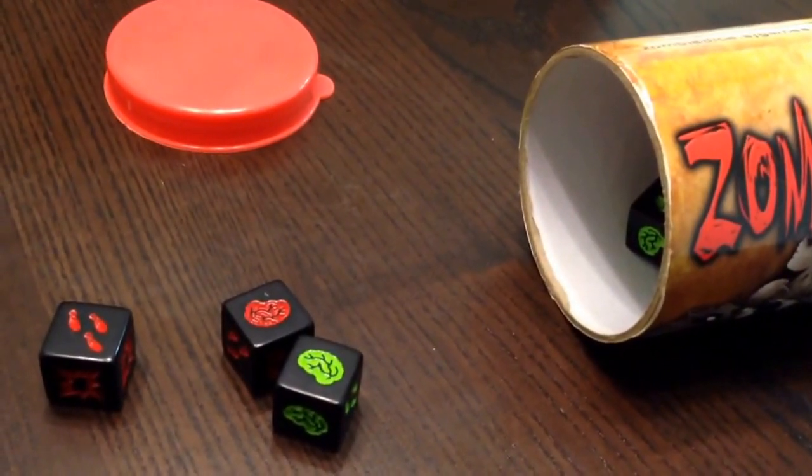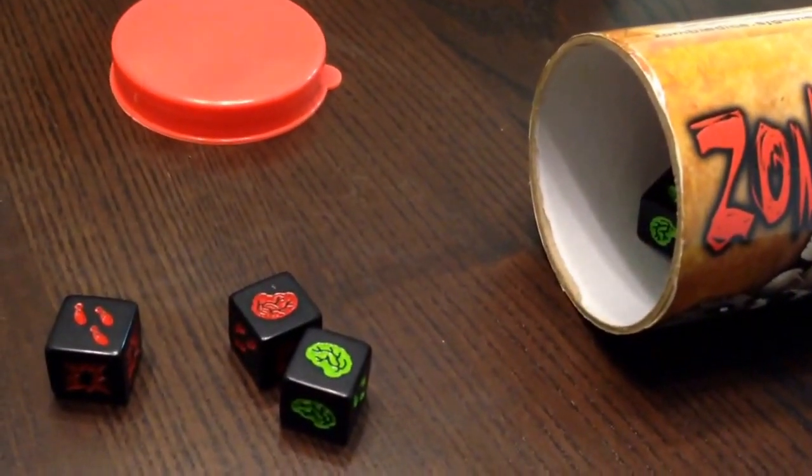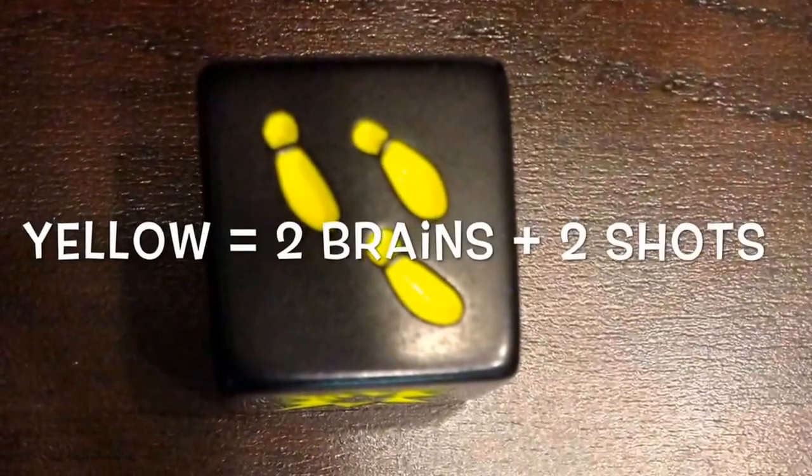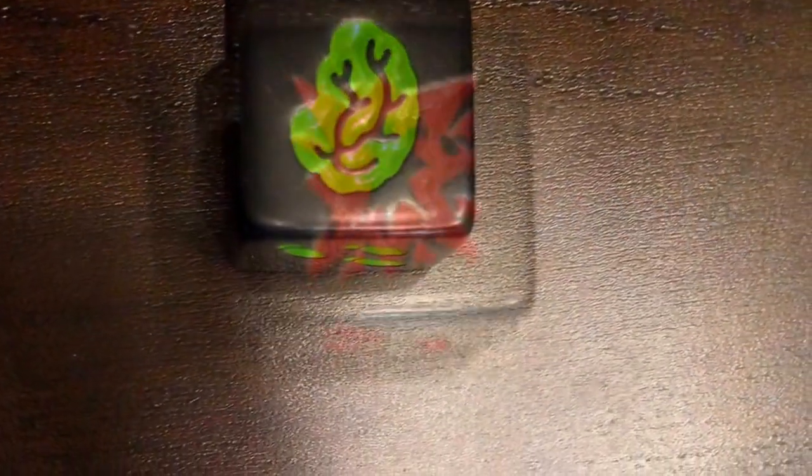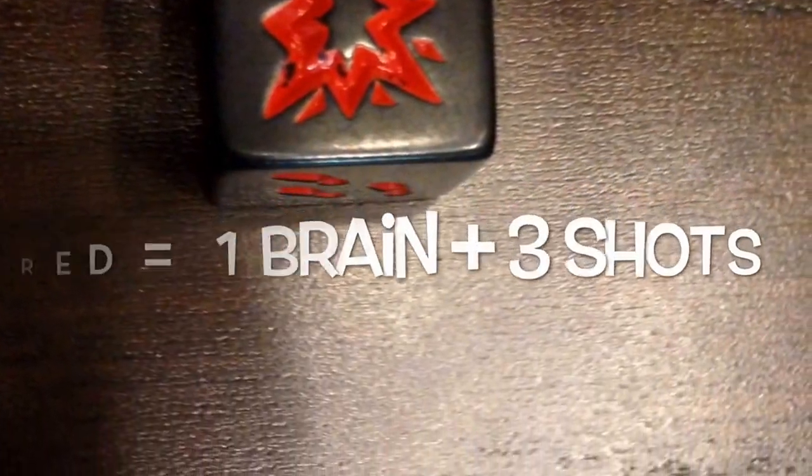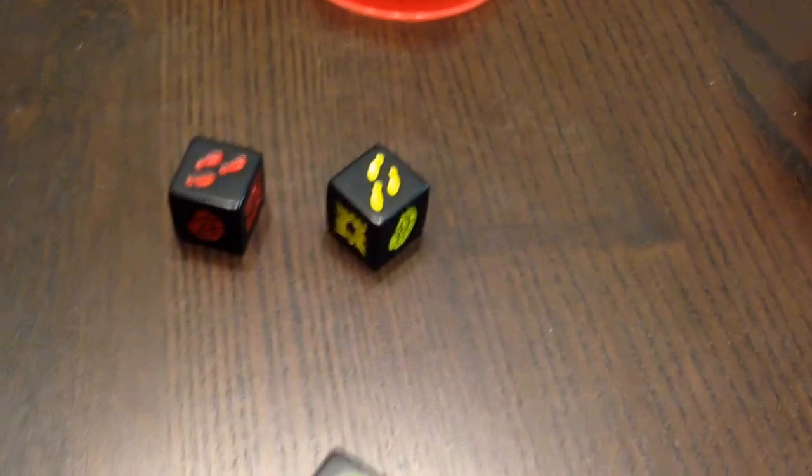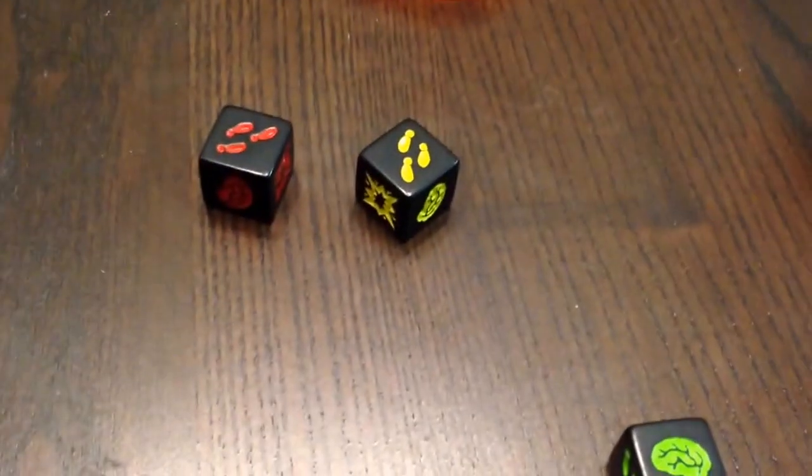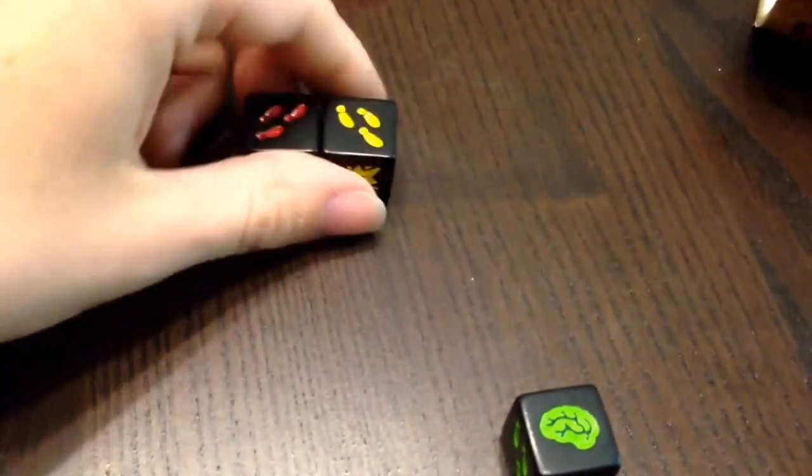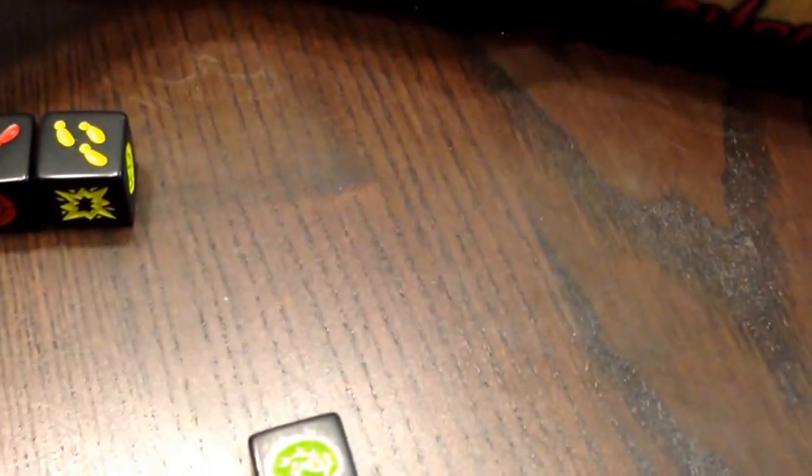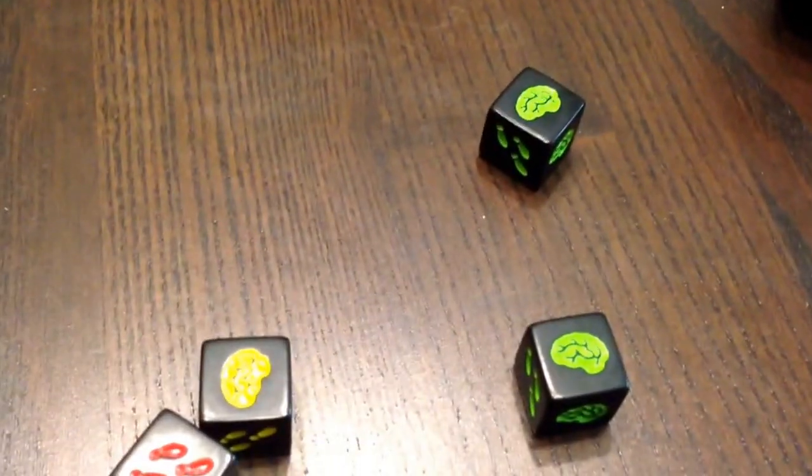On their turn, each player will randomly select three dice. Once the player rolls the dice, they set aside any brains or shots they may have. However, any runners must go in the next roll and be rolled along with that group.